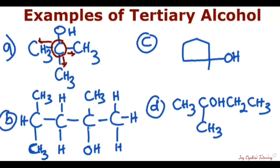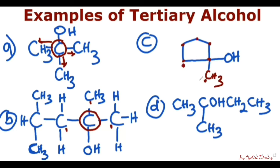For this next example, the carbon of interest — the one carrying the OH group — is attached to one carbon, two carbons, three carbons: tertiary alcohol, three. Here, each of these is carbon, and this is a methyl group which is CH3, so that's also carbon. You have one carbon, two carbons, and three — so three carbons, tertiary alcohol.